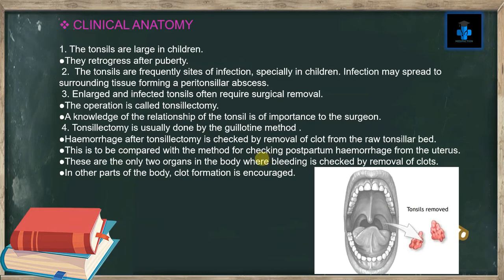Clinical anatomy: The tonsils are large in children and regress after puberty. The tonsils are frequently sites of infection, especially in children. Infection may spread to surrounding tissue, forming a peritonsillar abscess. Enlarged and infected tonsils often require surgical removal — the operation is called tonsillectomy. Knowledge of the relationships of the tonsil is of importance to the surgeon.